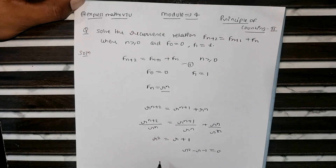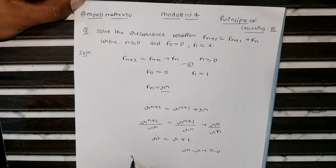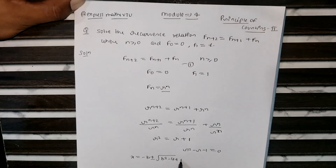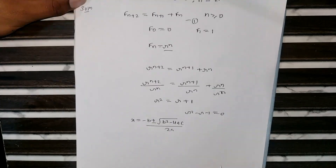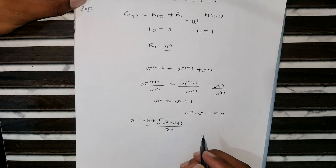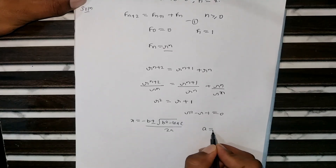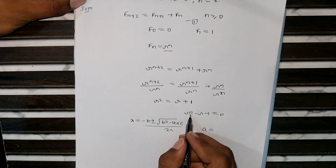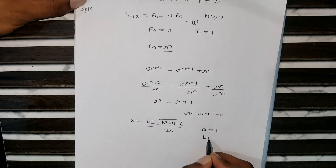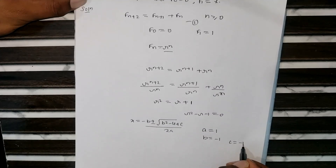Solve with the help of the quadratic formula. The general formula is x = (−b ± √(b² − 4ac)) / 2a. Compare this equation to get the values of a, b, and c. The coefficient of r² gives a = 1, the coefficient of r gives b = −1, and the constant gives c = −1.